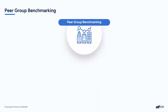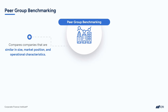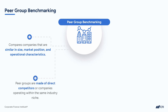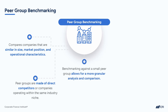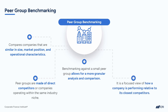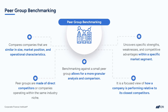In contrast, when benchmarking against a small peer group, the focus is on comparing financial ratios and performance metrics with a selected group of companies that are similar in size, market position, and operational characteristics. The peer group is typically composed of direct competitors or companies operating within the same industry niche. Benchmarking against a small peer group allows for a more granular analysis and comparison, providing a focused view of how a company performs relative to its competitors, uncovering specific strengths, weaknesses, and competitive advantages within a specific market segment.